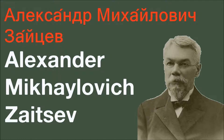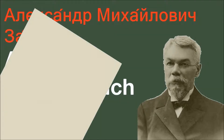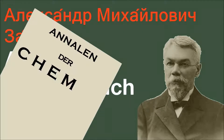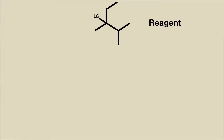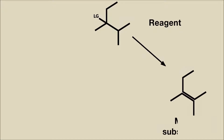Zaitsev published his findings in the prestigious journal Justus Liebig's Annalen der Chemie in 1875. The choice of beta positions is a pragmatic one — the product with the lowest energy is preferred.